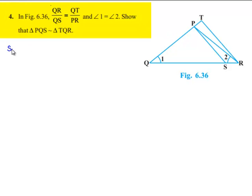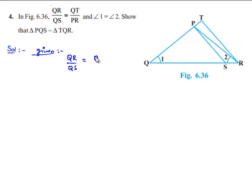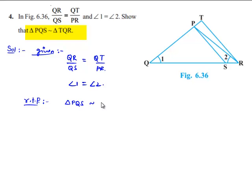Now moving on to the solution. Let us note the given information: QR by QS is equal to QT by PR, and angle 1 is equal to angle 2. We are required to prove that triangle PQS is similar to triangle TQR.